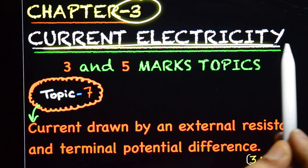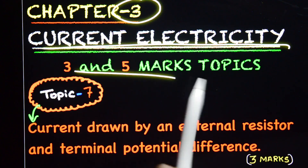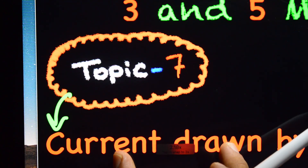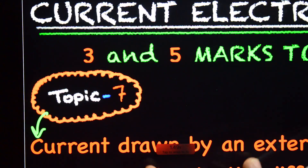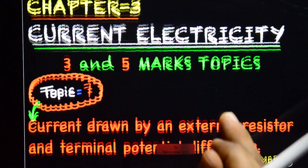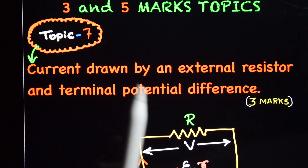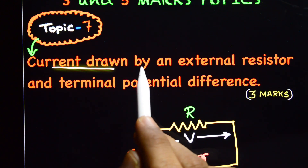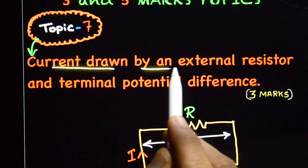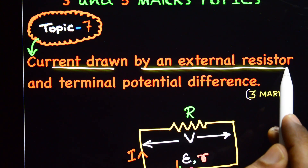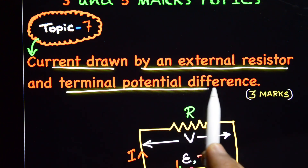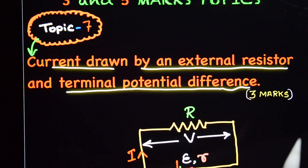Chapter 3: Current Electricity — 3 and 5 marks topic. This is topic number 7: Current drawn by an external resistor and terminal potential difference.